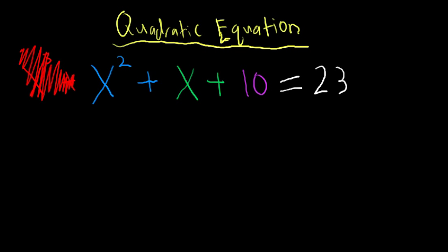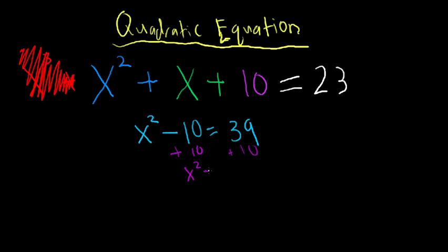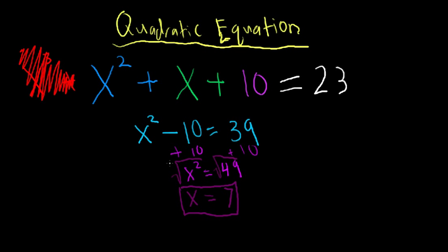Let's look at solving one very simple quadratic equation. Let's do x squared minus 10 equals 39. Now this can be solved pretty easily — there's nothing too complicated here. We just add 10 to both sides, and now we have x squared equals 49. From here it seems pretty simple: we just take the square root of both sides. And we get x equals the square root of 49, which would be 7. So we've found 7 as a solution to the quadratic equation.